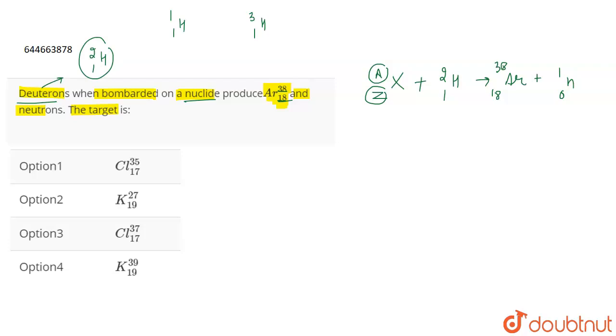Now, what we are going to do is balance the electrons, protons and neutrons and find out the value of A and Z. So, let us first balance the atomic numbers. We will get Z plus 1 equals 18 plus 0. From here the value of Z is going to be equal to 17.